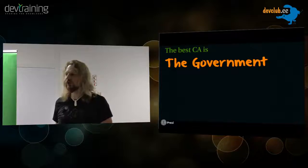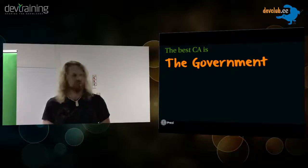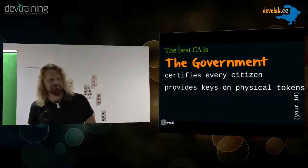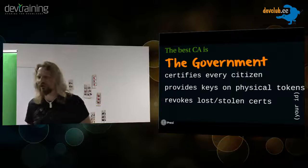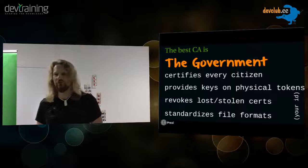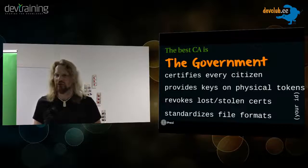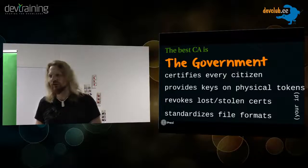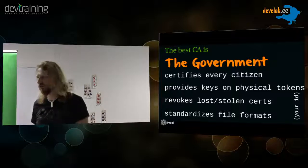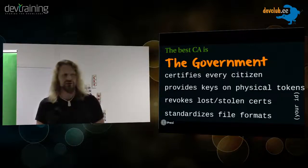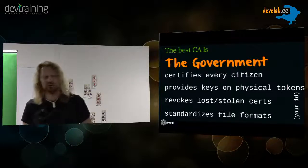In Estonia we can build a web service and rely on that every person should be able to have a public and private key for digital signatures. In Russia, where we work, it's actually impossible — you need to create everything by yourself from scratch. Estonia's government certified every citizen, provided keys on physical tokens like ID cards, manages all the stolen stuff, and also standardized file formats. Otherwise it would be quite hard to exchange digital signatures. The person receiving a signature needs to have the software and know what format it is and how to interpret all the data. Estonia also standardized the algorithms and provides software to end users and libraries to developers.